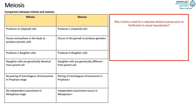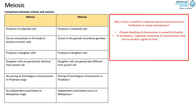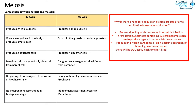Why do we need reduction division in meiosis prior to fertilization? Why can't gametes be produced via mitosis instead? The reason is to prevent the doubling of chromosomes in sexual fertilization. In fertilization, two gametes fuse together. The reduction division ensures that each gamete contains 23 chromosomes, so when they fuse they form a zygote with 46 chromosomes. If reduction division didn't occur and gametes were produced by mitosis, there would be a doubling of chromosomes in the zygote each time fertilization occurred.